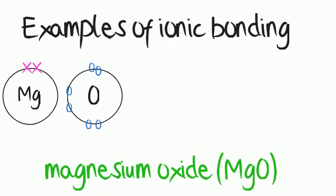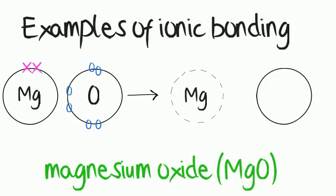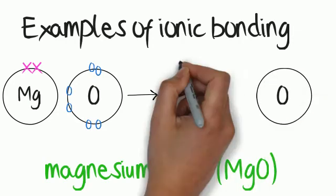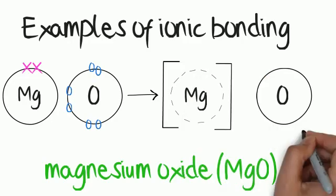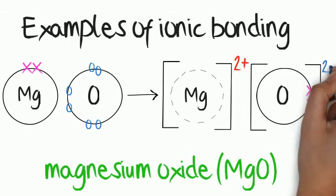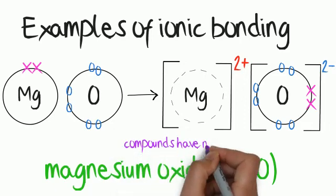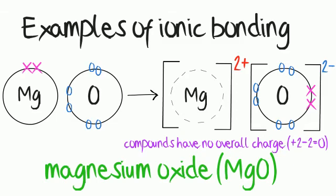Here are some examples of ionic bonding. Magnesium oxide: magnesium has two electrons in its outer shell that it needs to give away, and oxygen has six electrons in its outer shell and needs two more to get a full outer shell. When drawing the ions, place the correct charges on them — magnesium donates two electrons so it becomes 2+, and oxygen receives two electrons so it becomes 2−. Note that the compound has no overall charge, as +2 and −2 equals zero.